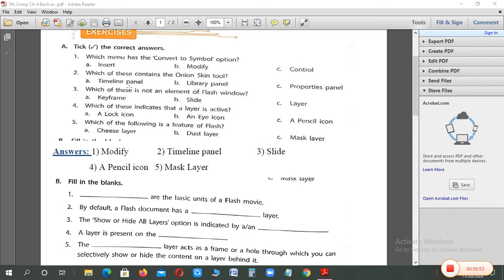Which of these contains the onion skin tool? In last video, we have seen the onion skin tool. Where was it? Timeline panel. The timeline panel is at the bottom, which has the onion skin tool option.